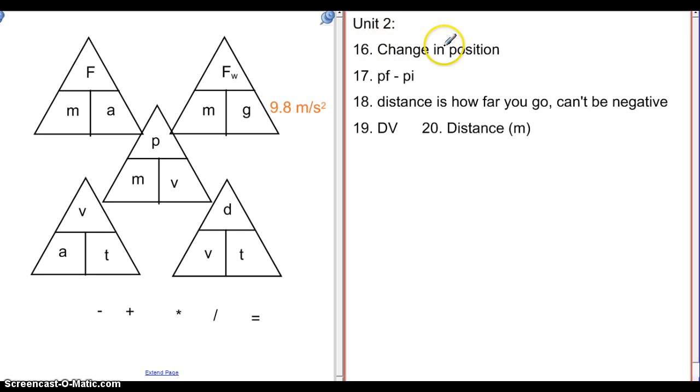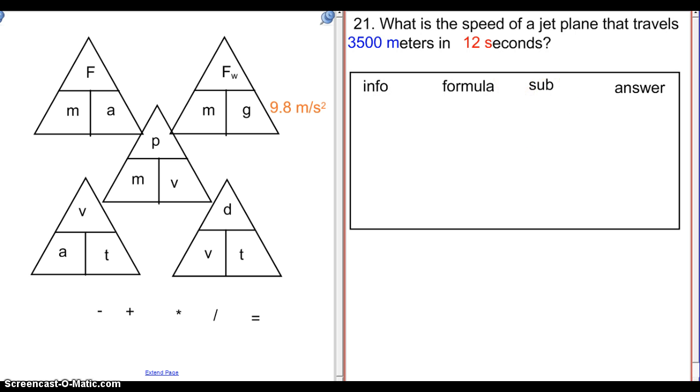For unit 2, delta P is change in position. Remember that delta means change in and P is position. So just kind of translating that to words. Your formula for that is PF minus PI. The big difference is that distance is how far you go and it cannot be negative. The dependent variable is always graphed on the y-axis of graph. And the independent variable on the graph shown for number 20 is distance.